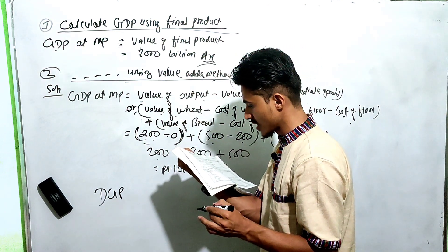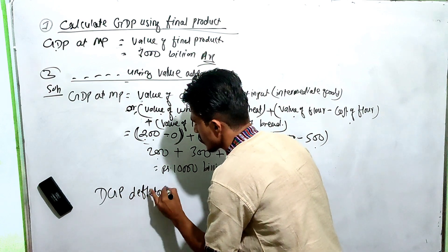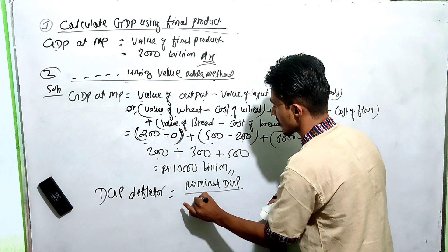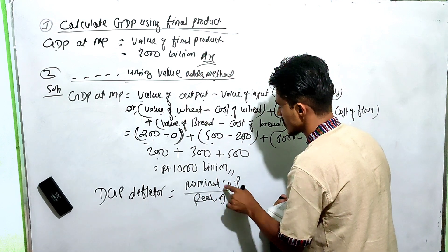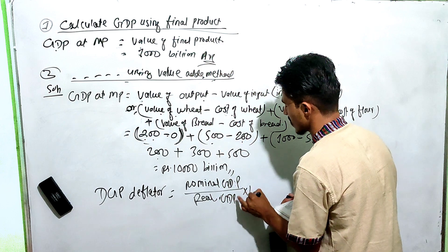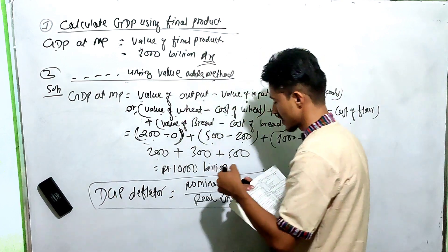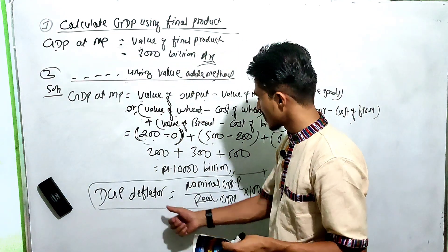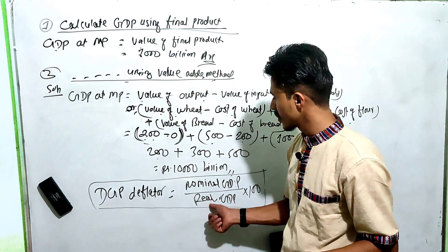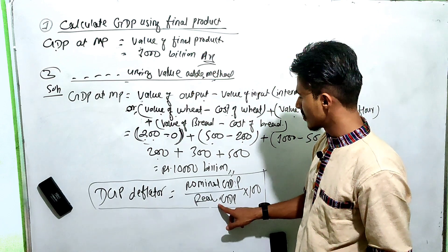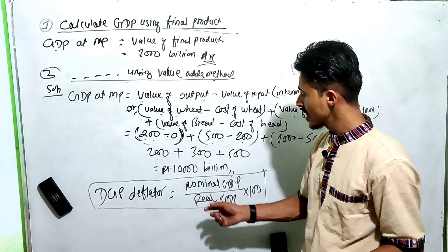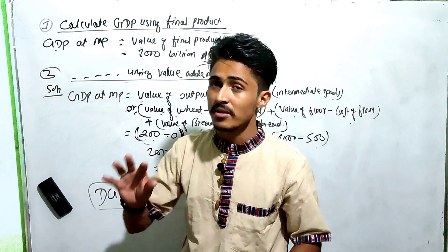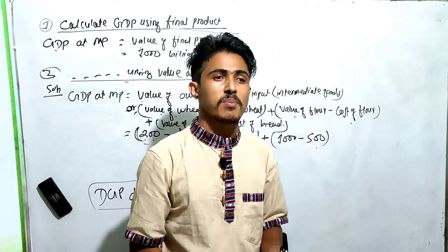The short question covers GDP deflator. The formula for GDP deflator is: nominal GDP divided by real GDP, multiplied by 100. We apply this formula using two sets of numbers. We multiply the numbers and use the formula to calculate the GDP deflator.